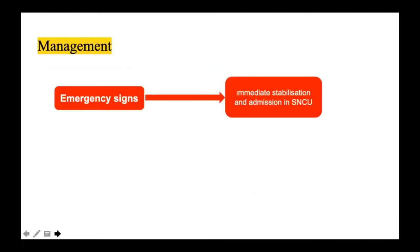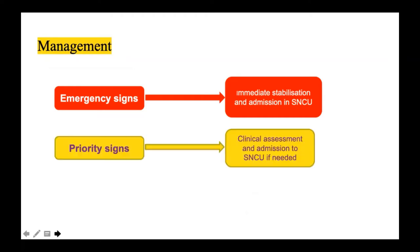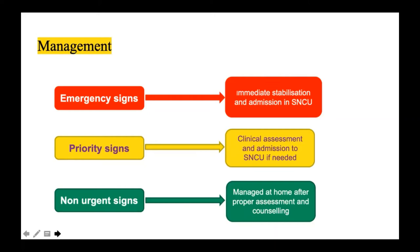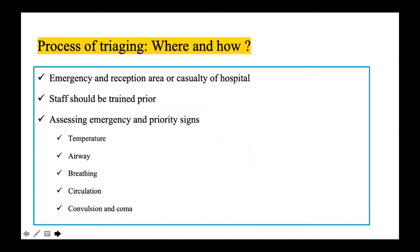Management: if any emergency sign is present, immediately stabilize the child, take immediate action, and admit to the SNCU after stabilization. If a priority sign is present, the treating physician performs detailed assessment and decides admission. For non-urgent signs, parents and caregivers can be counseled that the issue is not major and can be managed at home. Triaging generally happens at the reception area or casualty — any trained healthcare worker including pharmacist, nursing officer, or doctor can perform it.